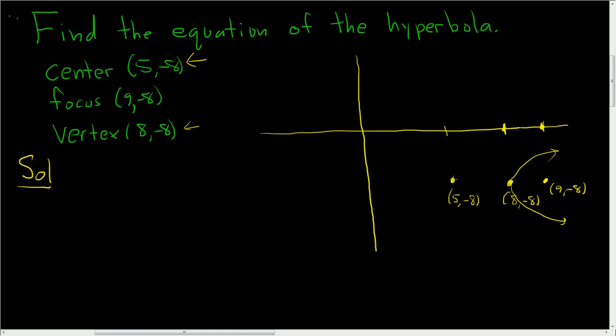A is going to be this distance here, so a will be 3. And this distance here is going to be c, so c will be 4.